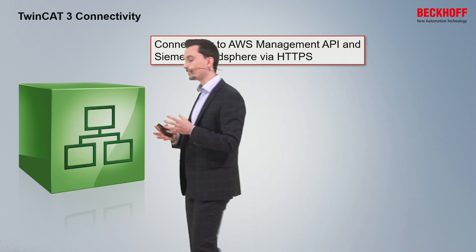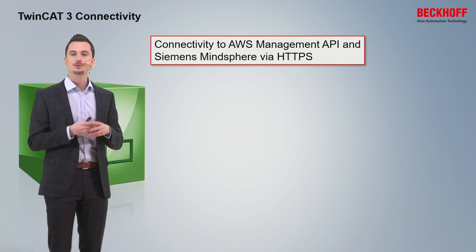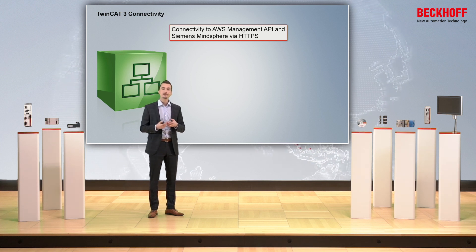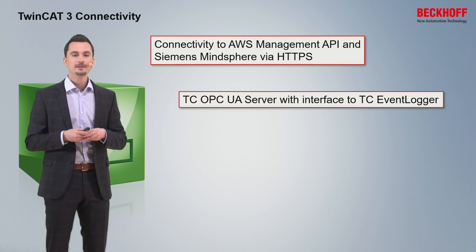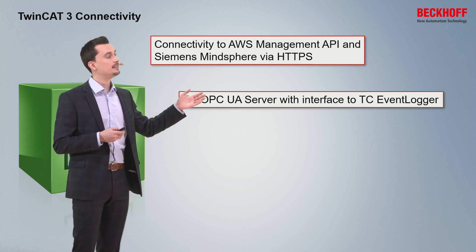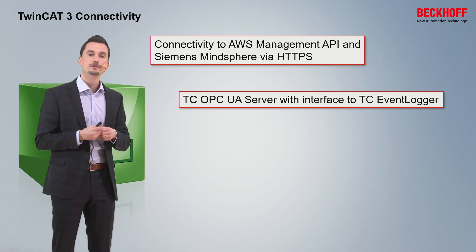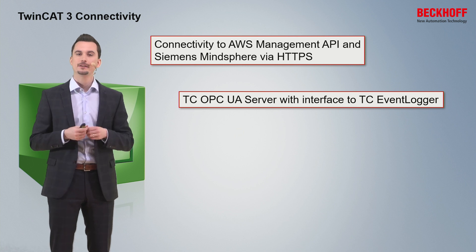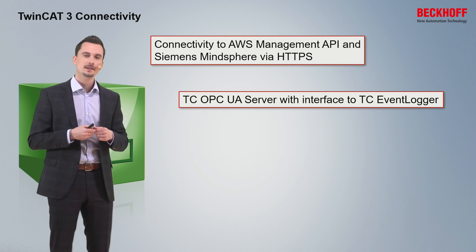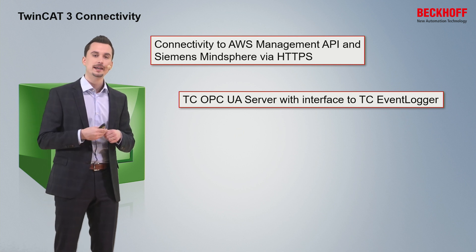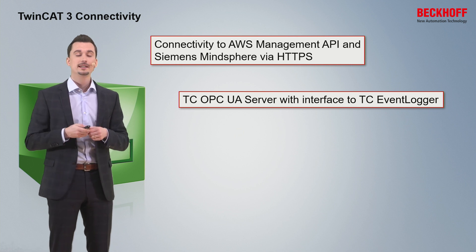From the point of view of connectivity, we also have some news. With the help of the new HTTP REST product, we can now connect to an AWS management API but also to the Siemens MindSphere. From the point of view of OPC UA, we can now additionally add the TwinCAT event logger — using an interface to convert TwinCAT event logger events into OPC UA events. For alarms which can be confirmed, it is even possible to do the confirmation on the OPC UA side, with the info sent back to the TwinCAT event logger.